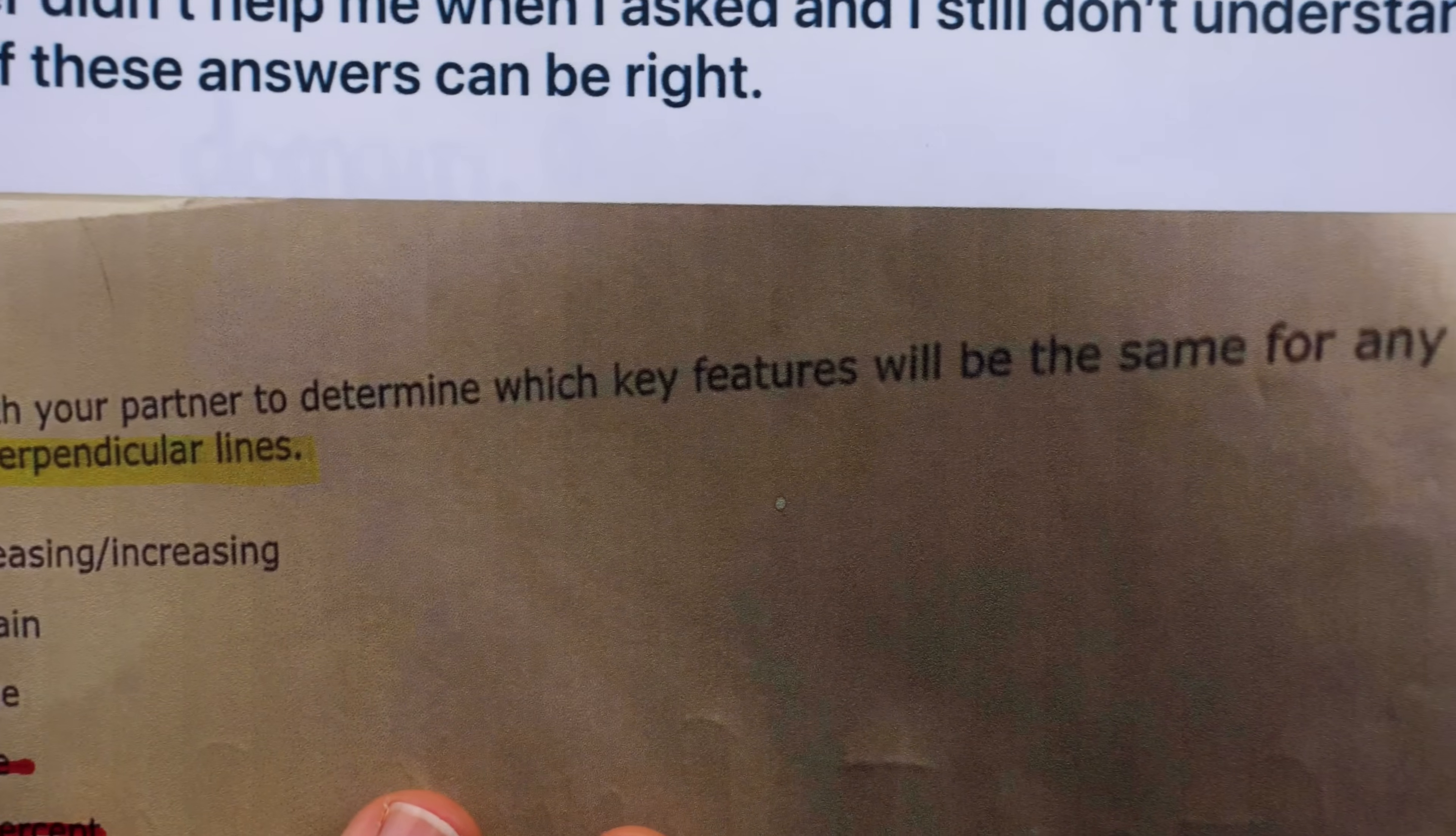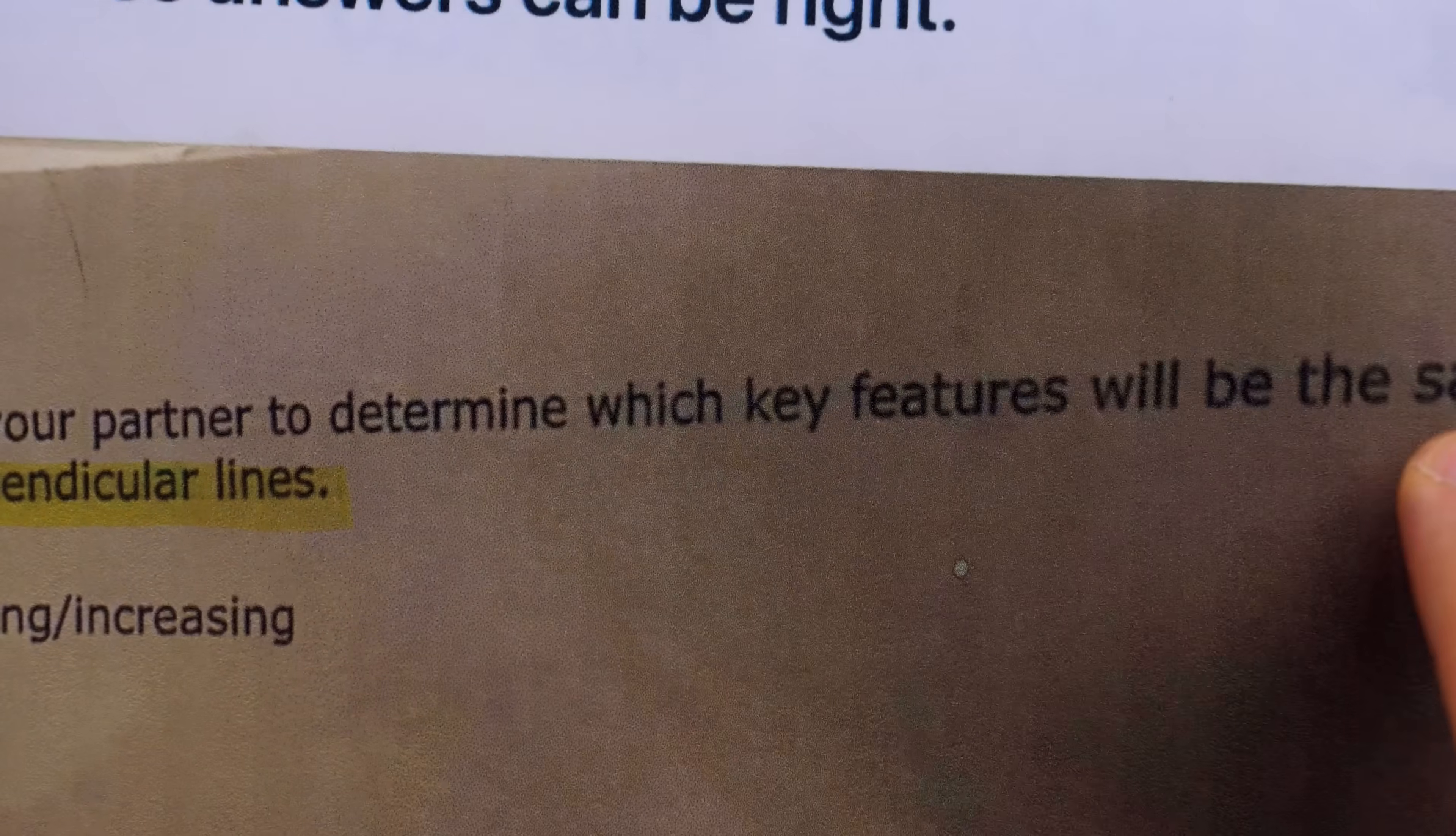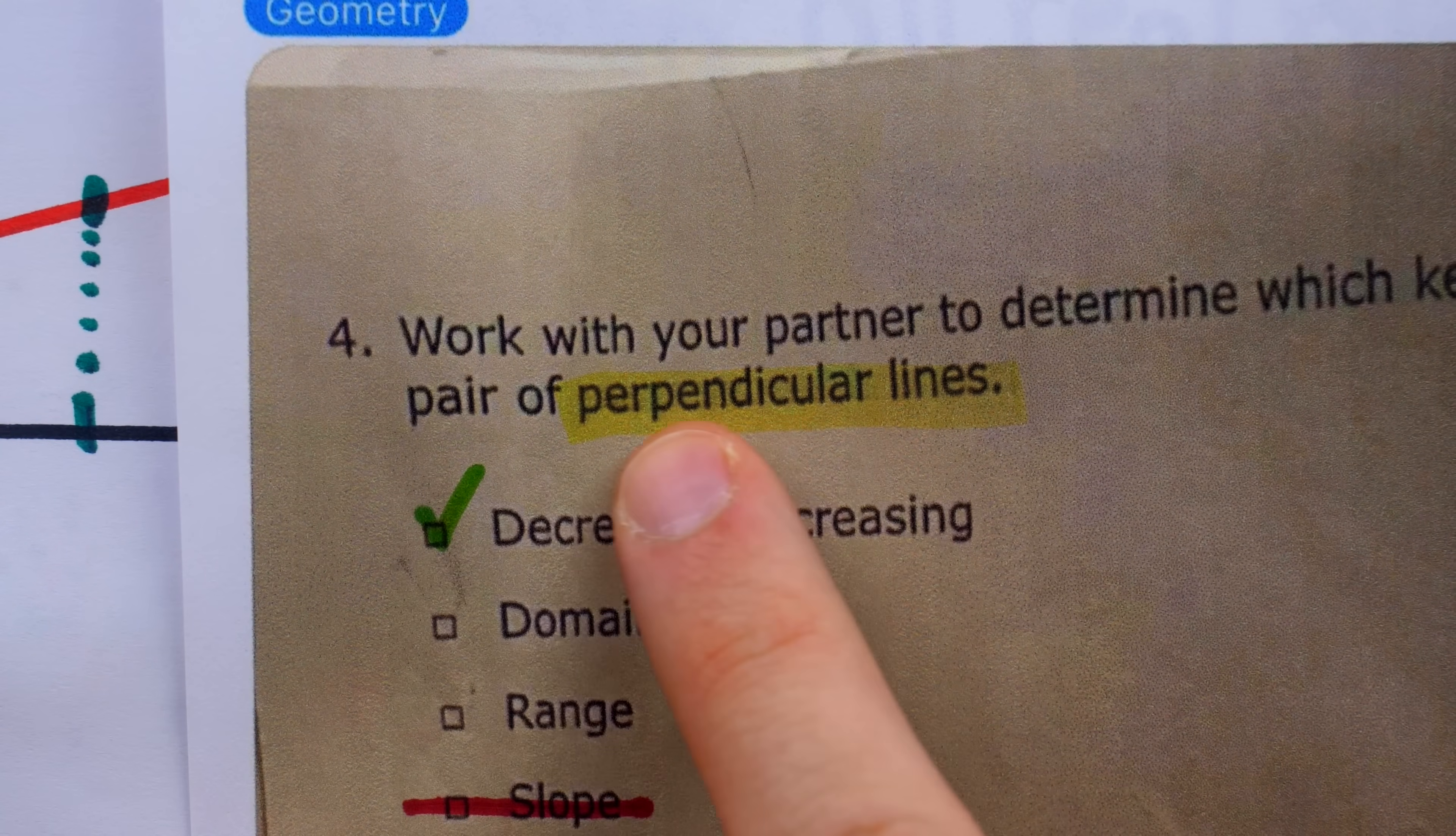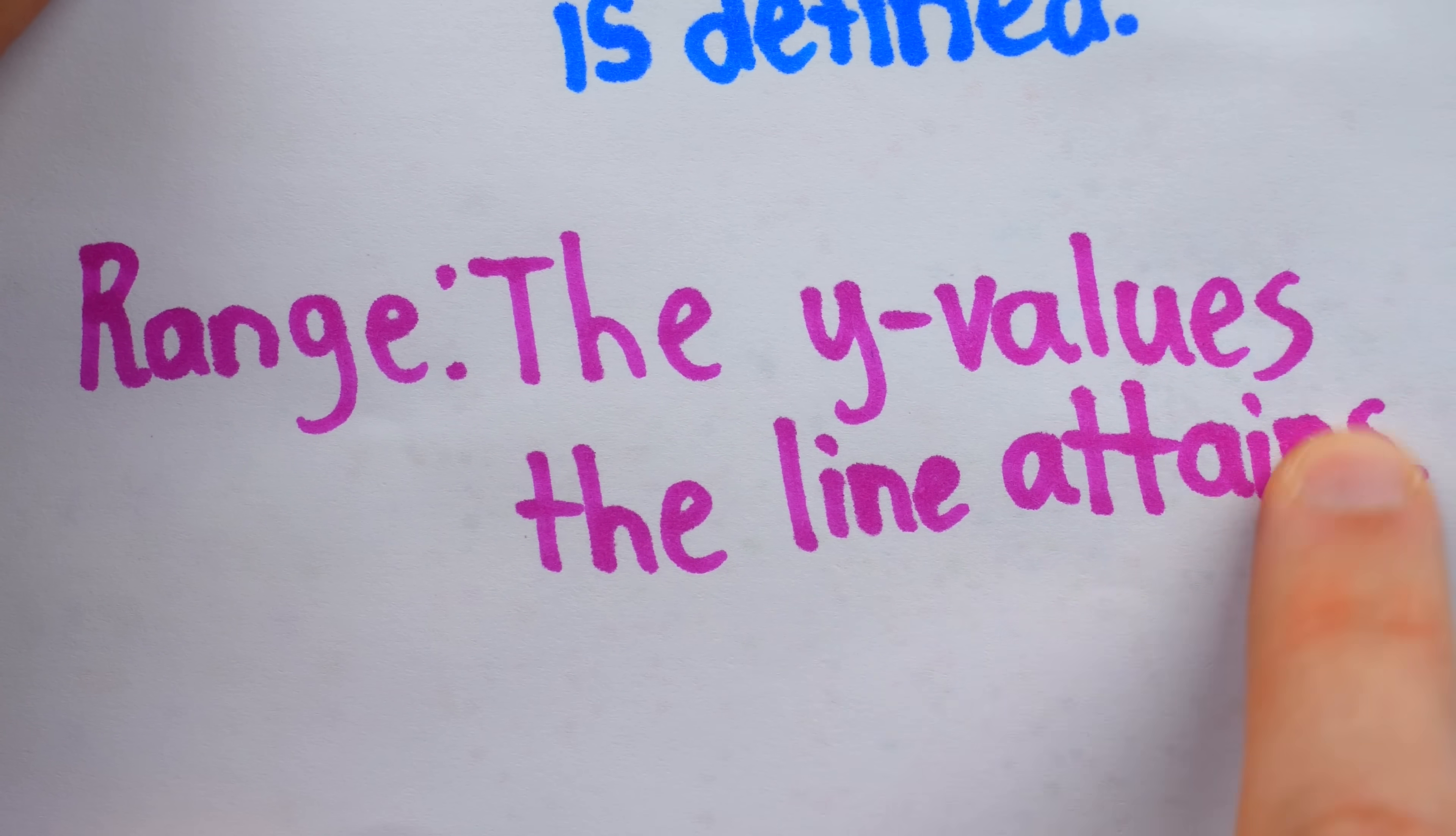the ranges of these perpendicular lines are also the same. The set of real numbers once again. But the key question is, will the domains and will the ranges always be the same for any pair of perpendicular lines?